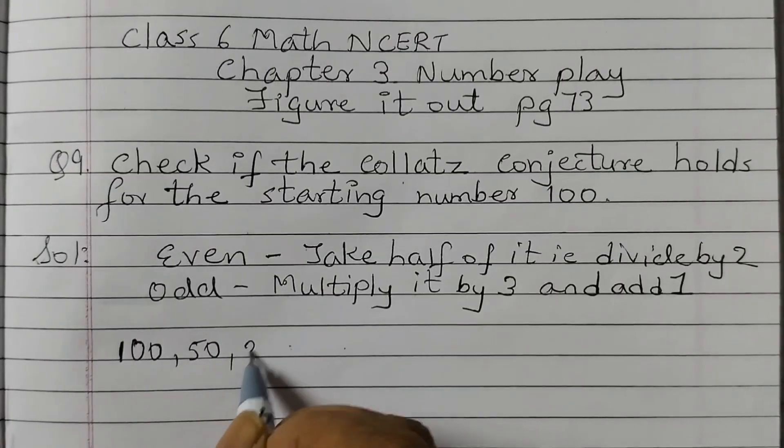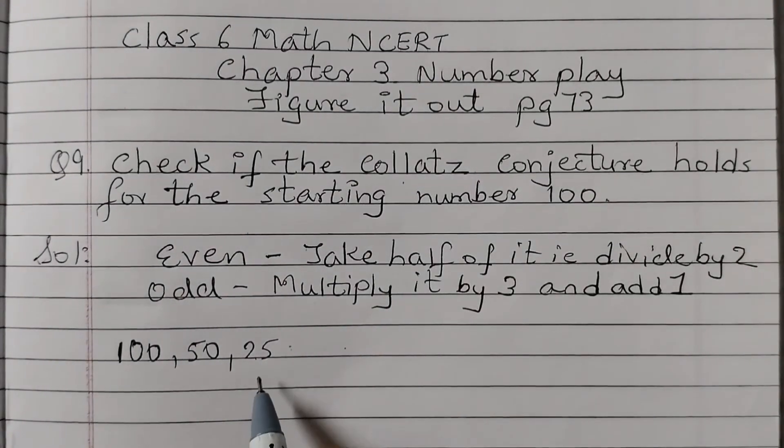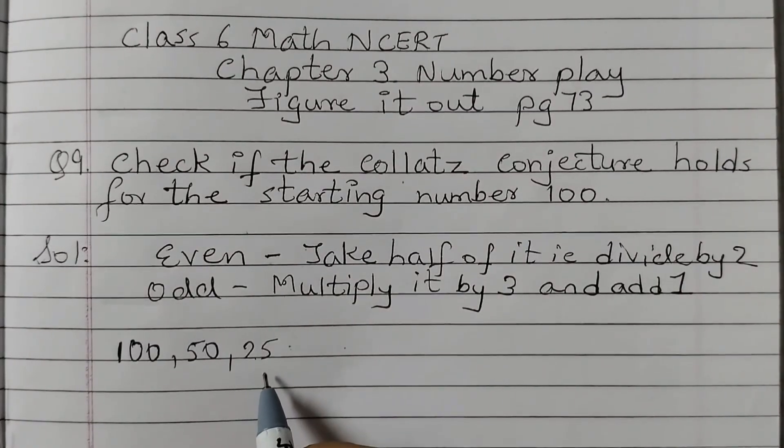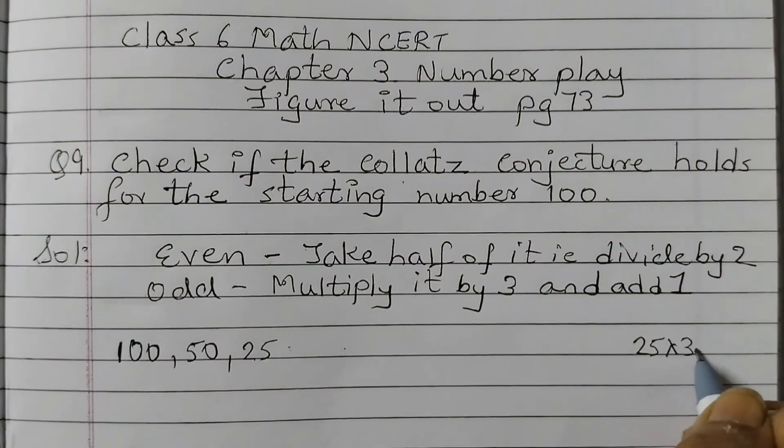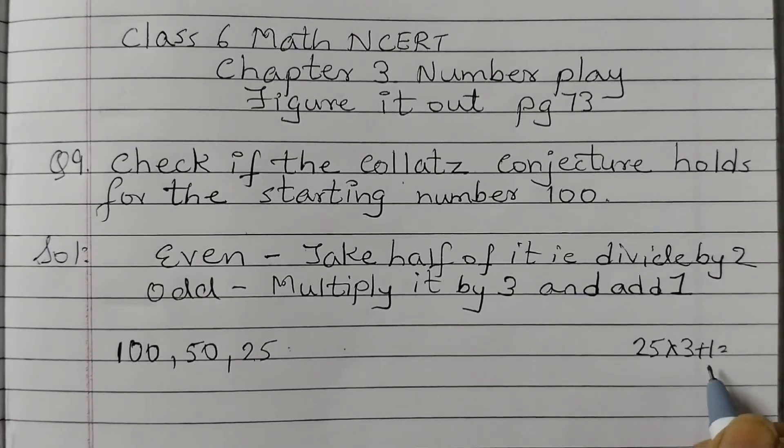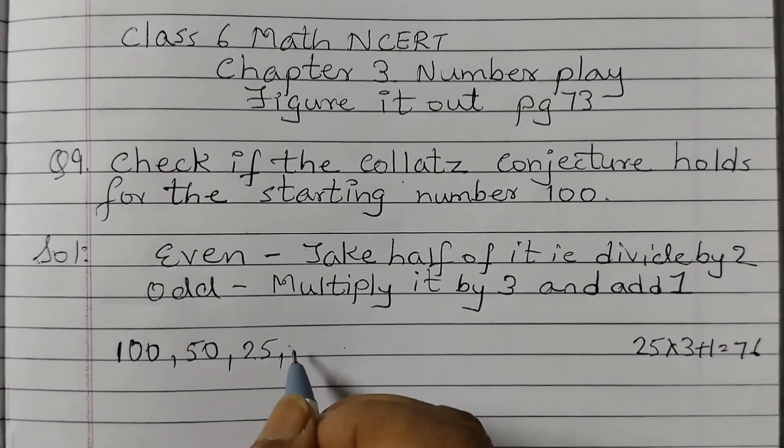50 even number, half of 50 is 25. 25 is odd number. So we need to multiply by 3 and then add 1. So 25 into 3 plus 1, 75 plus 1 is 76.